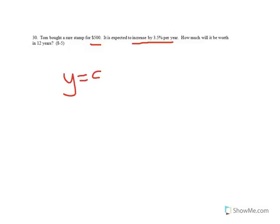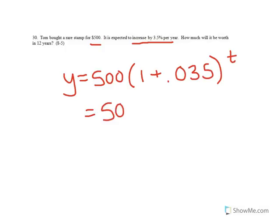So y equals 500 is my initial amount, and it's increasing by 3.5%, 0.035 to the t. So my equation for this situation is 1.035 to the t times the initial amount, which was 500.